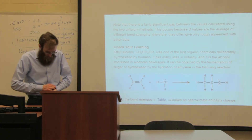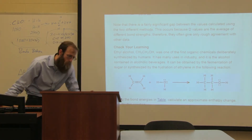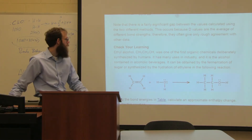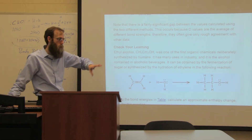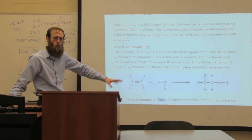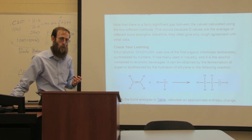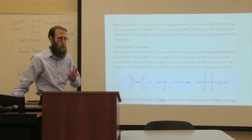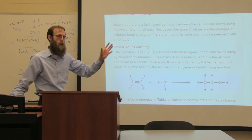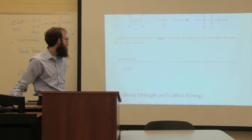Hopefully that has made sense. You draw out the Lewis dot diagrams, identify the bonds that are broken and the bonds that are formed, add up the energies for each type, then subtract: bonds broken energy minus bonds formed energy.